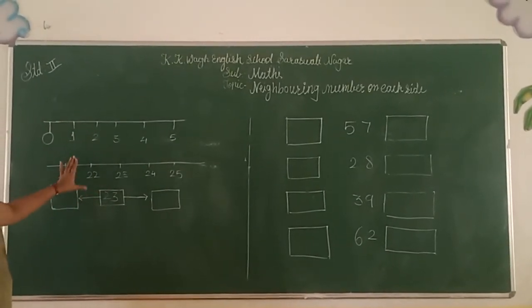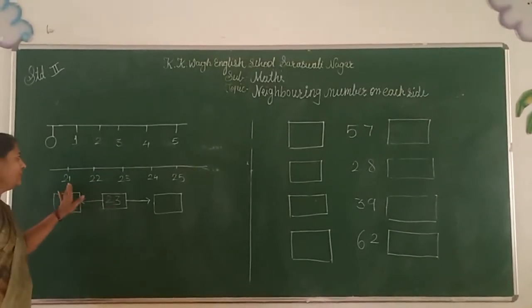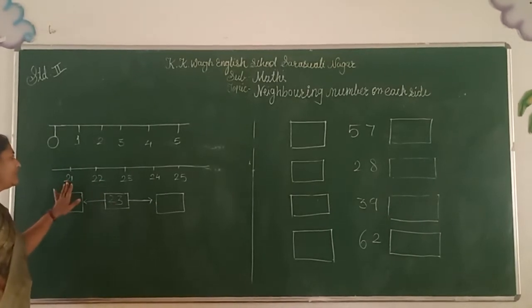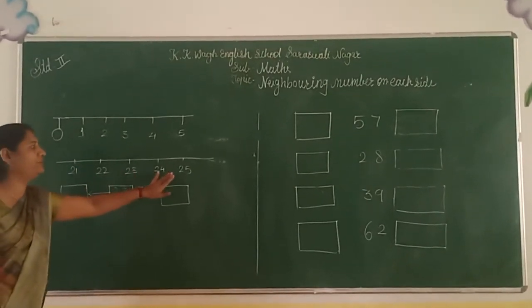Now observe this number line and solve the sum. Now this is the second number line. In this number line there is a number 21, 22, 23, 24, 25.